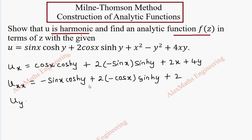Similarly u_y, we keep sin x as it is and derivative of cosh y is sinh y plus we keep this constant 2 cos x, sinh y derivative is cosh y. Again, x squared is 0, minus y squared is minus 2y plus 4x is a constant, y derivative is 1.